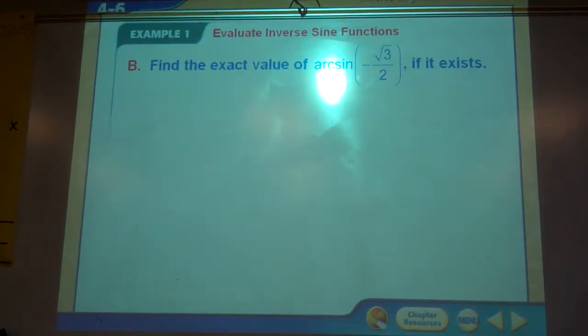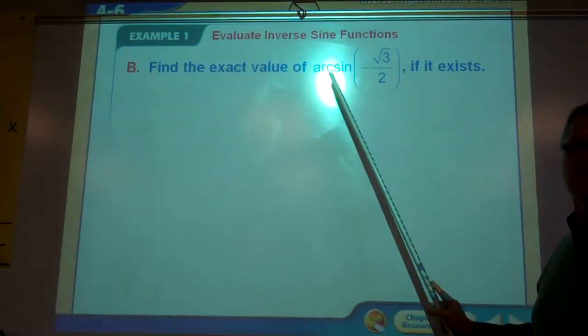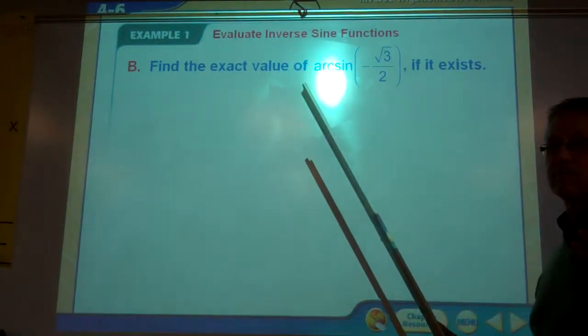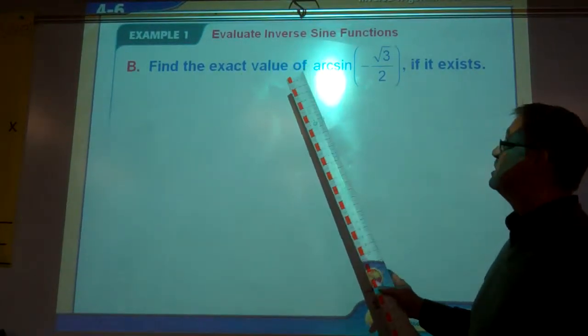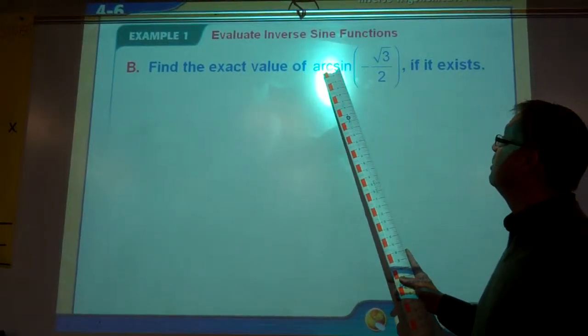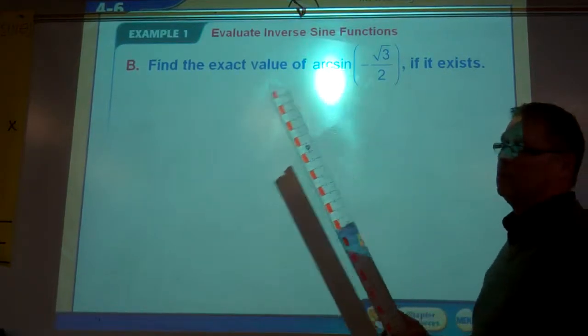Let's try another one. This time, instead of sine to the minus one, they use the word arc sine. It means the same thing. You'll use the same button. And you could read this as, find the angle whose sine is negative square root of three over two. Shoot.